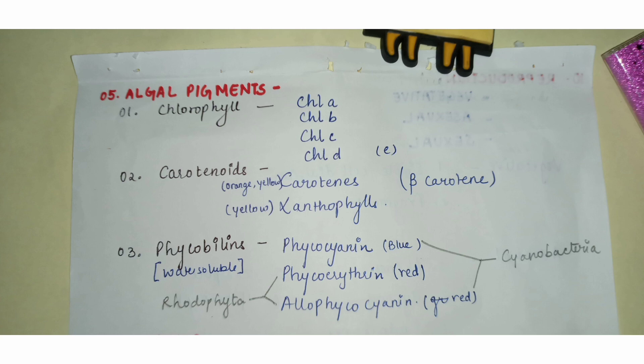The third pigment group is phycobilins, comprising three sub-pigments: phycocyanin, which is responsible for blue color; phycoerythrin, responsible for red color; and allophycocyanin. Phycocyanin and allophycocyanin together are responsible for the blue-green color of the Cyanophyta group.